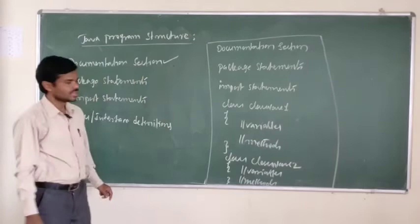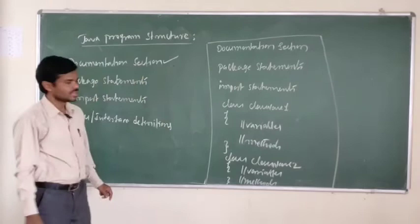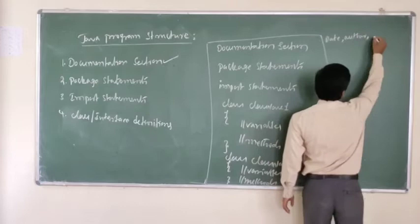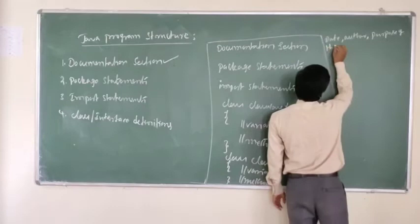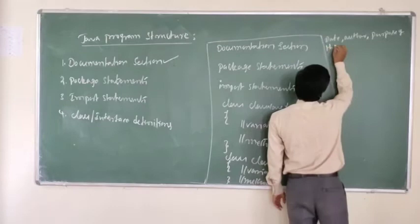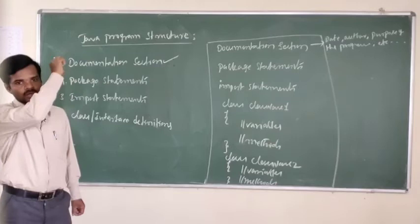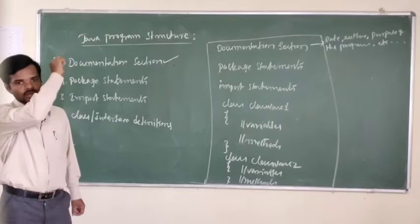Documentation section: this section contains some basic details of the Java program — for example, the date, the author, and the purpose of the program, and other details. Documentation means we are going to write some information about the program at the top, using comments.